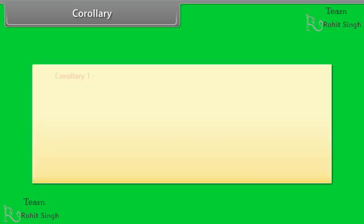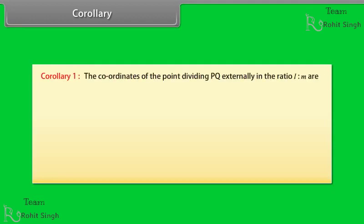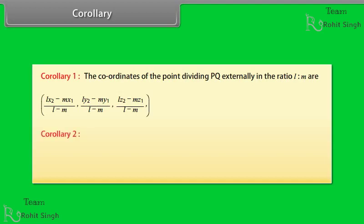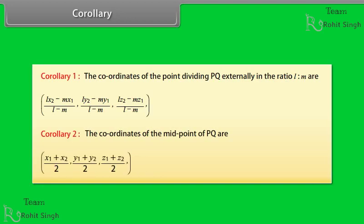Corollary 1: The coordinates of the point dividing PQ externally in the ratio L : M are [(LX2 − MX1)/(L−M), (LY2 − MY1)/(L−M), (LZ2 − MZ1)/(L−M)]. Corollary 2: The coordinates of the midpoint of PQ are [(X1+X2)/2, (Y1+Y2)/2, (Z1+Z2)/2].